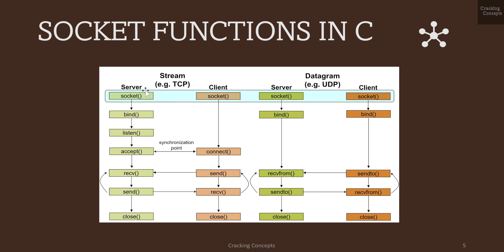In TCP, both server and client use the functions socket, send, receive, and close. The functions bind, listen, and accept are for the server in TCP, and the client uses a function called connect. In UDP, both server and client use socket, bind, sendto, recvfrom, and close.